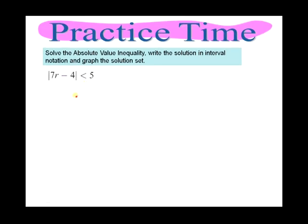Let's look at one more example: the absolute value of 7r − 4 is less than 5. Is this a conjunction or disjunction? It's a conjunction — less than means conjunction! So we break it up into the compound inequality: 7r − 4 > −5 AND 7r − 4 < 5.